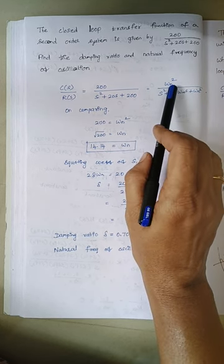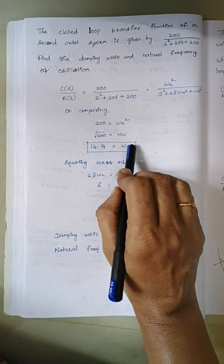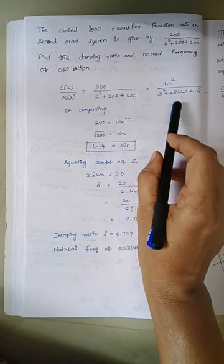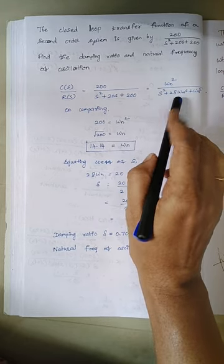So when you compare, the value of omega n squared is equal to 200. So from that calculate the value of omega n. Now equate the coefficient of s, here it is 20 and here it is 2 zeta omega n.